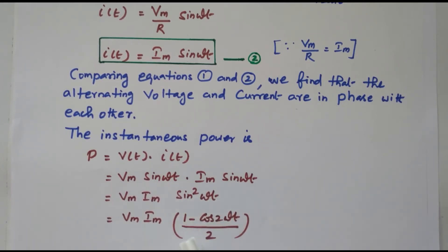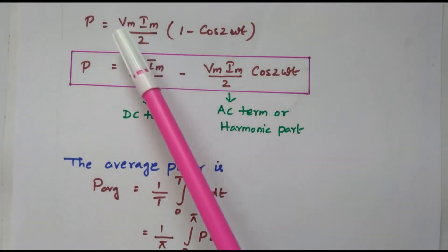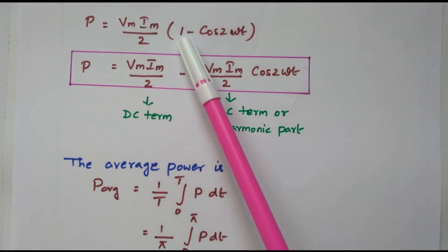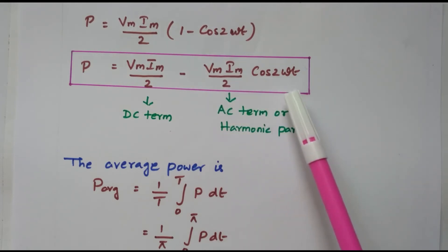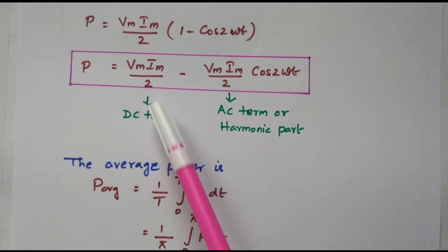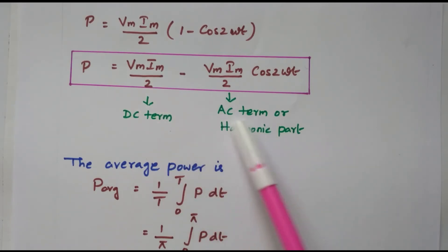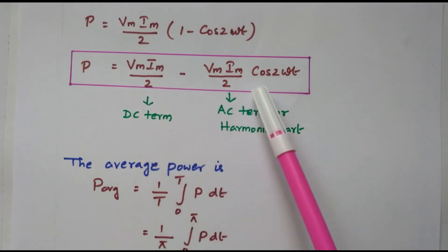Now sin²(ωt) can be written as (1 − cos 2ωt) / 2. So P = Vm · Im · (1 − cos 2ωt) / 2. Taking 2 outside: P = (Vm · Im / 2) · (1 − cos 2ωt). Multiplying the term inside: P = Vm·Im/2 − (Vm·Im/2) · cos 2ωt. The first term (Vm·Im/2) is the DC term — no cosine or sine present. The second term (Vm·Im/2 · cos 2ωt) is the AC or harmonic part.